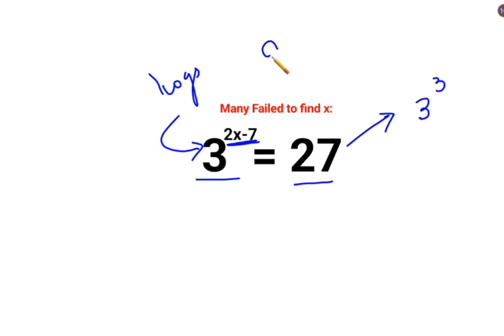And the rule of indices says that a raised to b equals to a raised to m. Then if the indices are same, we can directly equate the—sorry, if the bases are same, we can directly equate the indices.